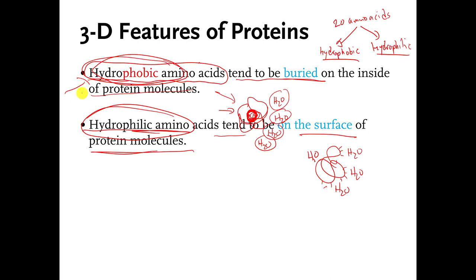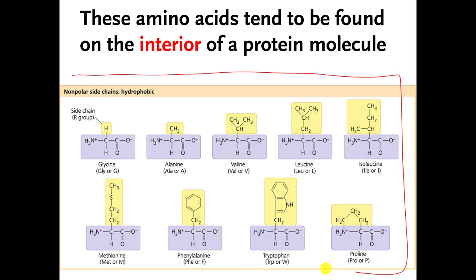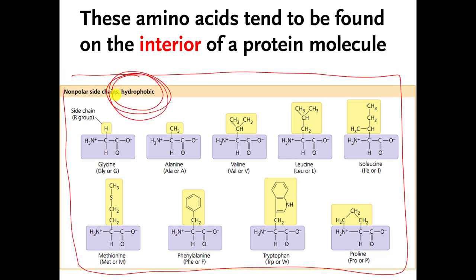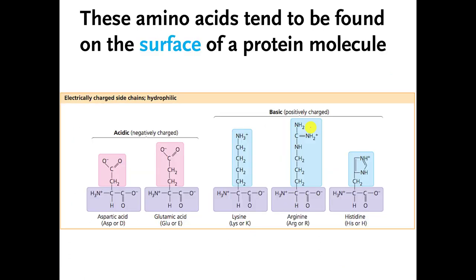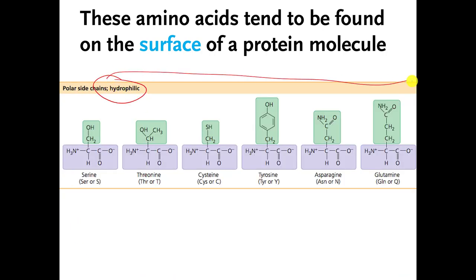So this is a general rule I want you to know: hydrophobic amino acids are usually on the inside of a protein molecule, and hydrophilic amino acids are usually on the surface. There are many exceptions to this, but this is generally true. Remember, these amino acids are hydrophobic — as a rule, you will find these amino acids buried on the interior of protein molecules once they're folded up. And as a rule, all of the other ones — hydrophilic — you usually find on the surface of protein molecules.